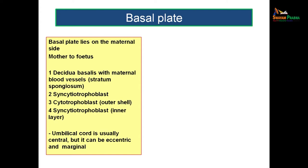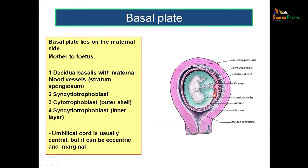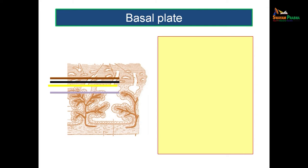The umbilical cord is usually central and can be eccentric or marginal. The basal plate has the decidua basalis — the region of endometrium where implantation happens — as the first layer from the mother's side. Then comes syncytiotrophoblast, followed by the cytotrophoblast outer shell, then again another layer of syncytiotrophoblast. These are the four layers encountered when looking at the basal plate from mother to fetus.